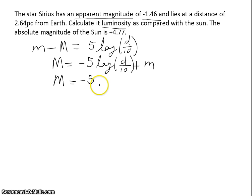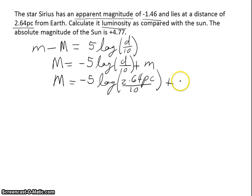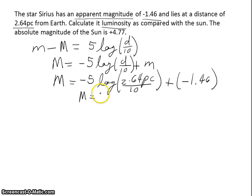Plugging in our numbers: absolute magnitude equals negative 5 log of 2.64 parsecs divided by 10, plus our apparent magnitude of 1.46. We find the absolute magnitude of Sirius is positive 1.43.